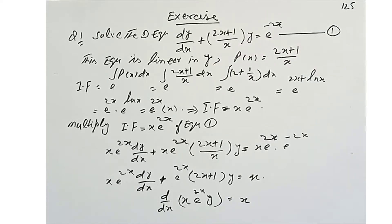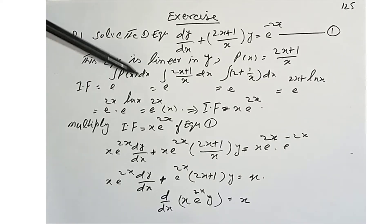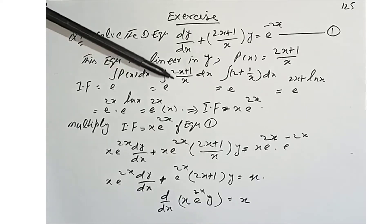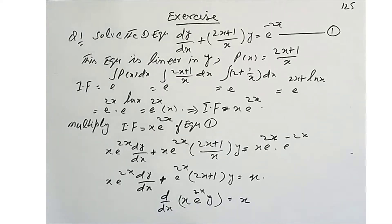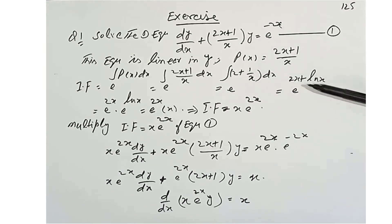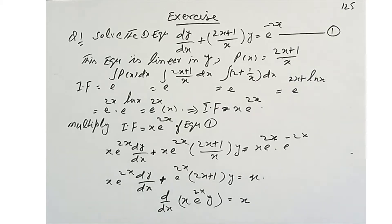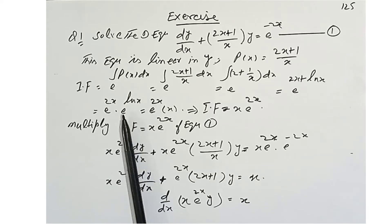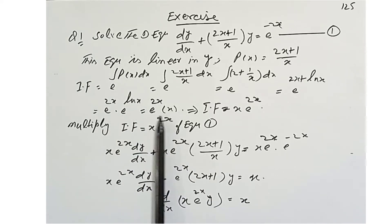First we find the integrating factor. The formula is e to the integral of P(x)dx. We put the value of P(x) as (2x+1)/x dx. The integral of 2 gives 2x and the integral of 1/x gives ln(x). So we have e^(2x) · e^(ln x), and since log and e cancel, the integrating factor is x·e^(2x).